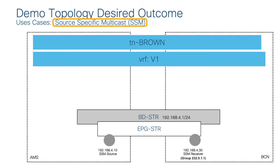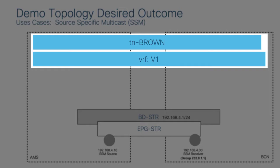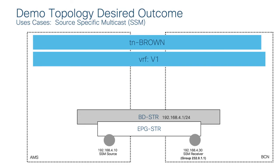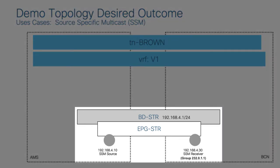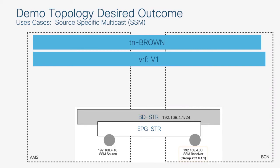After the IP example, I'll turn on source specific routed multicast. We see our familiar tenant brown stretched across both sites with VRF V1 also stretched. I've created a stretched BD and EPG with two endpoints: 192.168.4.10 on the left as the source specific multicast source, and 4.30 on the right as the SSM receiver. I'll show all of that working in the context of MSO.